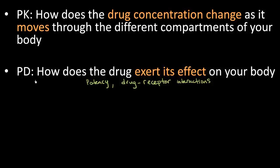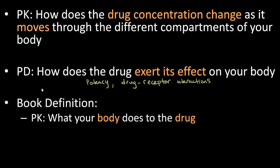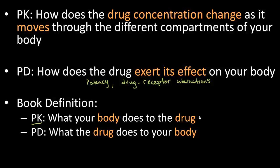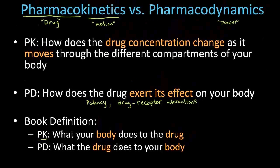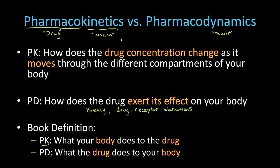Before we move any further, I want to explain how many books define this and how it can be confusing. A lot of books define pharmacokinetics as what your body does to the drug, and conversely, they define pharmacodynamics as what the drug does to your body. I always mix these two up, so I return back to my bread and butter: pharmacokinetics has to do with motion — drug concentration changing as it moves through my body. Pharmacodynamics — I think power, how does the drug exert its effects, drug-receptor interactions, potency, efficacy, all that jazz.